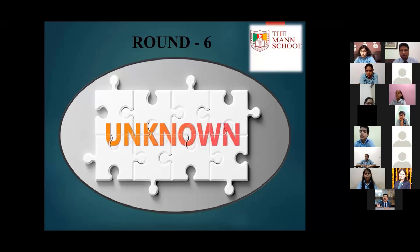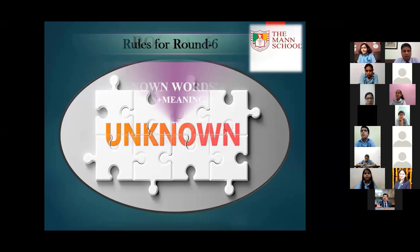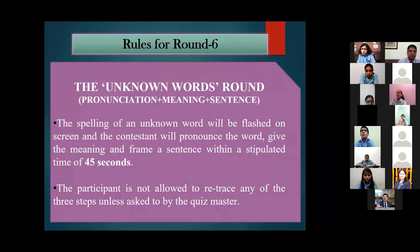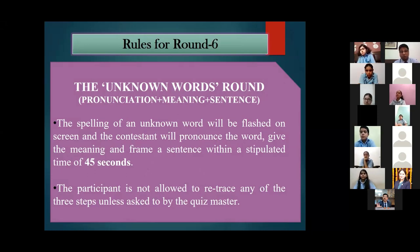After round five we move on to round six — the Unknown Words round. You have to pronounce the word, give its meaning, and frame a sentence. The spelling of an unknown word will be flashed on screen and the contestant will complete all three steps within 45 seconds. The participant is not allowed to replace any of the three steps unless asked by the quiz master.